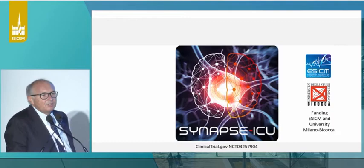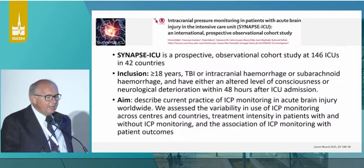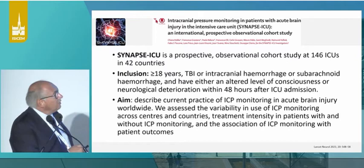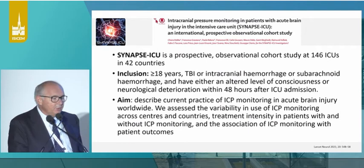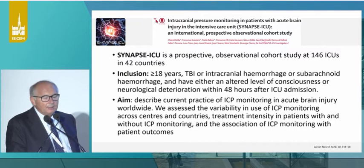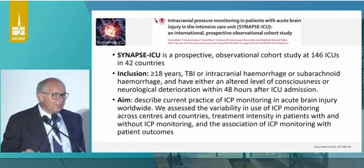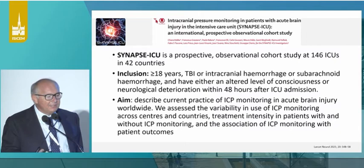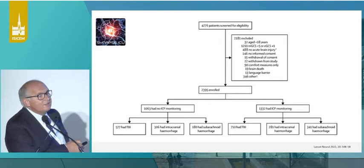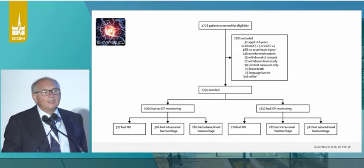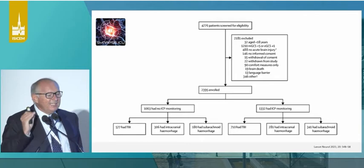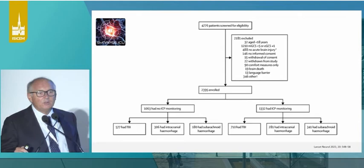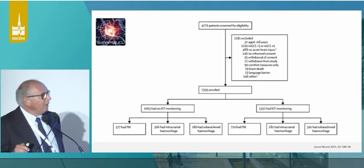So what did we do? We ran a very large observational study called Synapse-ICP, funded by the European Society of Intensive Care, published a couple of months ago in Lancet Neurology. We tried to have a large number of centers — 146 centers from 42 countries — and we selected comatose patients with spontaneous intracranial hemorrhage, traumatic brain injury, and subarachnoid hemorrhage. We wanted to describe the practice and also to understand if we were able to find information on the benefit of monitoring and treating ICP. We had 1,063 patients without ICP monitoring and 1,300 with ICP monitoring. It's a purely observational study — we didn't ask the centers to do anything, and we were able to have 146 centers participating by Twitter and email, without any support.